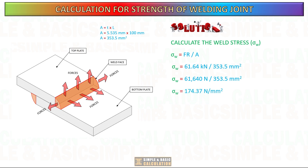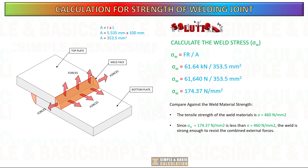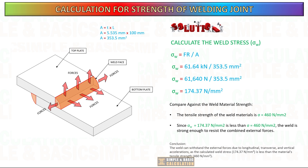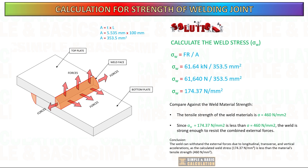Compare against the weld material strength. The weld can withstand the external forces due to longitudinal, transverse, and vertical accelerations, as the calculated weld stress of 174.37 N per mm² is less than the material's tensile strength of 460 N per mm².